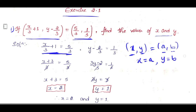Now, taking LCM which is 3, in the numerator you will get x + 3 = 5/3. The 3s cancel, leaving x + 3 = 5. Taking 3 to the left hand side, x = 5 - 3, so x = 2. We got the value of x.